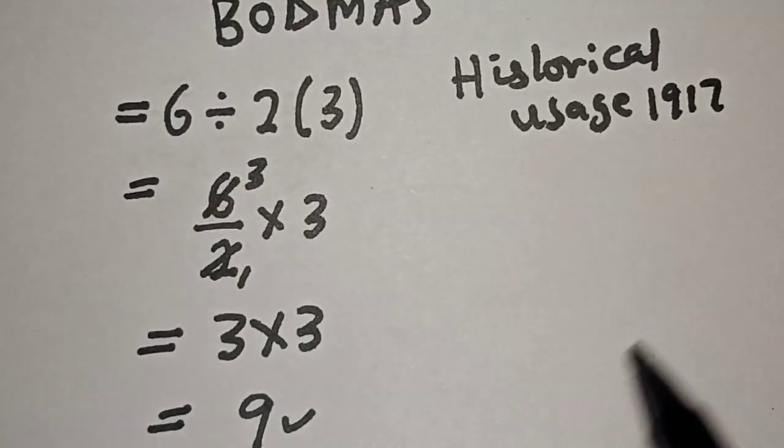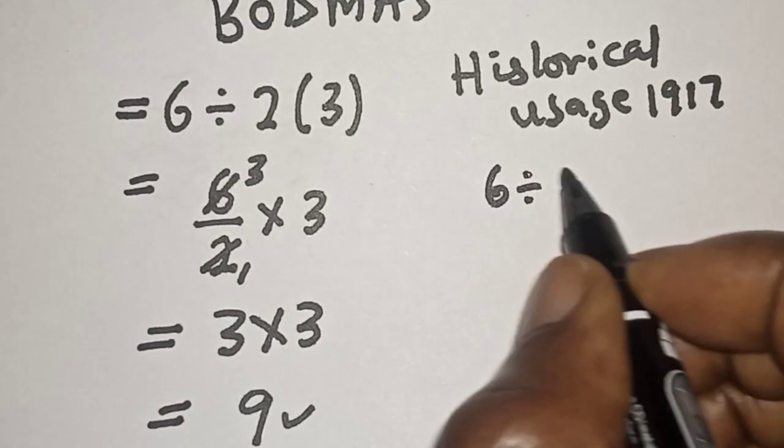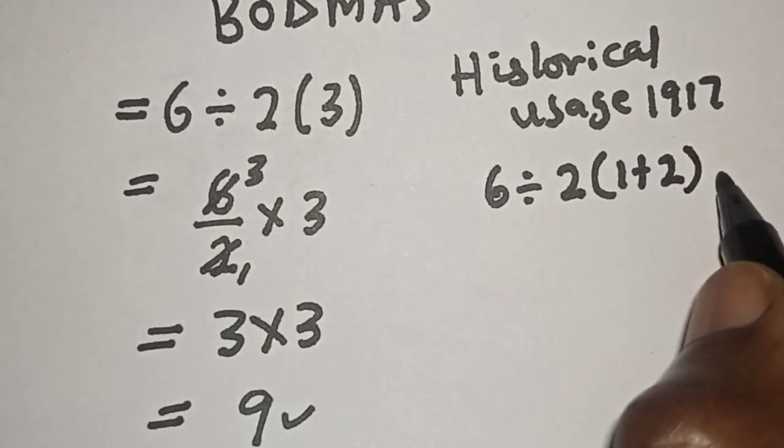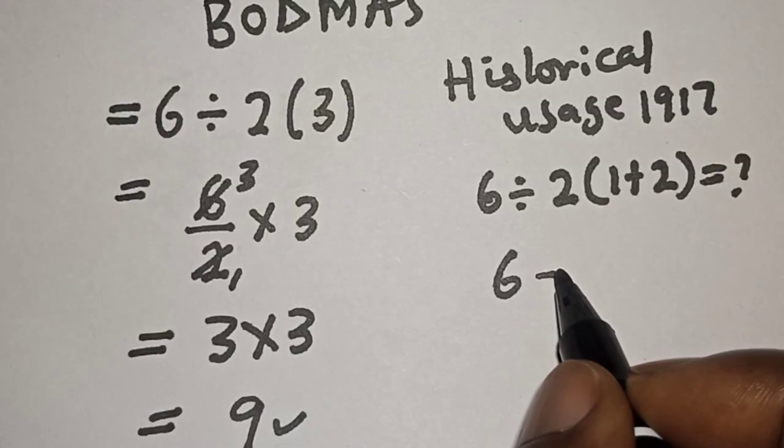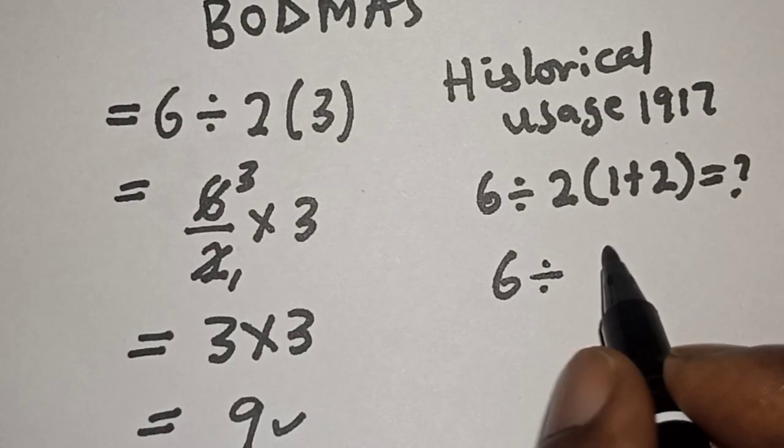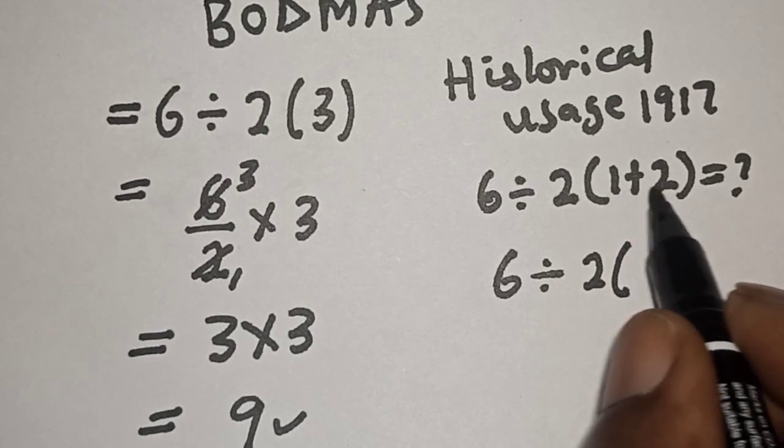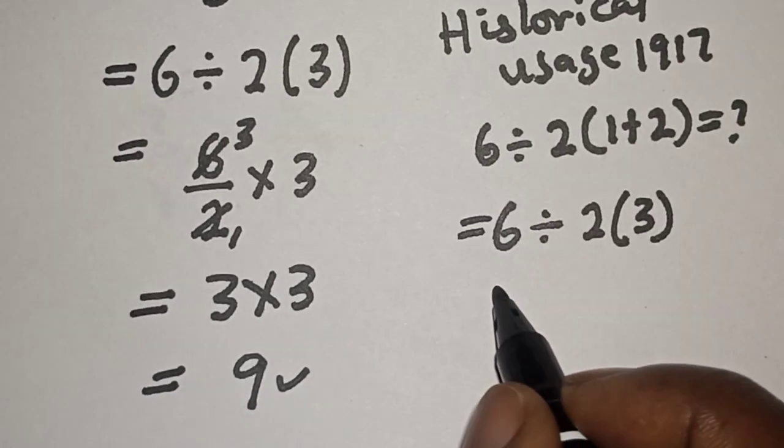1917. Then with this let's see what will happen. We have 6 divided by 2 bracket 1 plus 2, and this is where the confusion. 6 divided by 2 bracket 1 plus 2. This is the rule, then this is